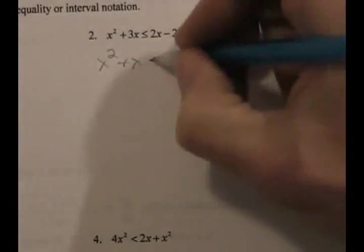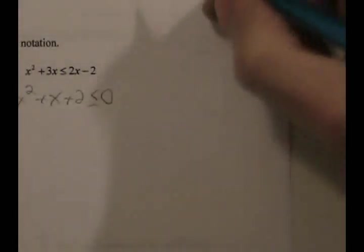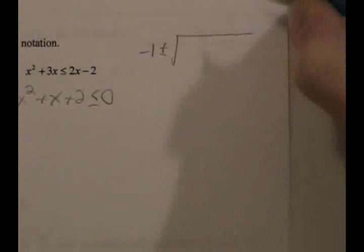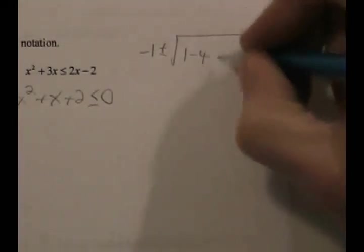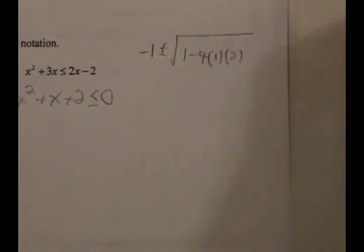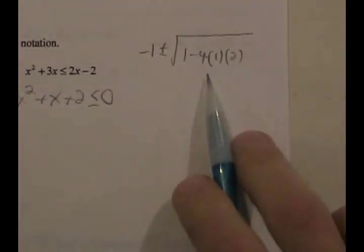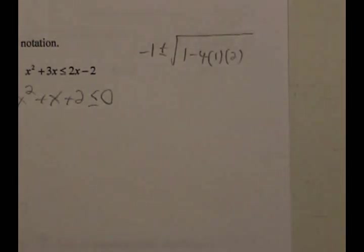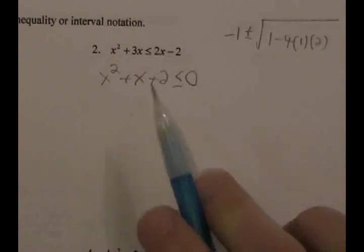Number 2: we do the same thing — pull everything over to one side, so we'll have x squared plus x plus 2 is less than or equal to zero. You try to factor because it's all about the zeros, but it doesn't factor. So we do a little side work using the quadratic formula: negative 1 plus or minus the square root of b squared minus 4ac, and you can see right away this gives a negative underneath the radical, which means this expression is never equal to zero.